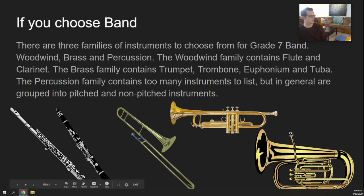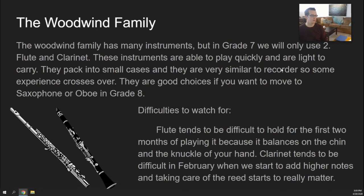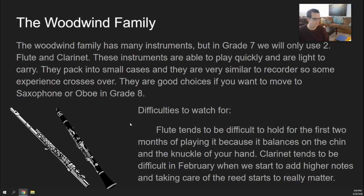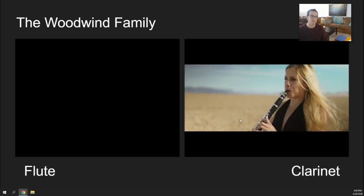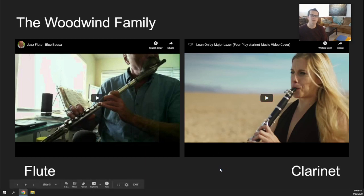These are some of those instruments: flute, clarinet, trombone, trumpet. This picture could be a euphonium or a tuba, depending on the size of the picture, because a euphonium is pretty much just a shrunken down tuba. In the woodwind family, in grade 7 band, we only use flute and clarinet. There is some experience from recorder that makes these two instruments a little bit easier. Also, these two instruments tend to be in treble clef. You can go ahead and click on the links to hear some flute and some clarinet.